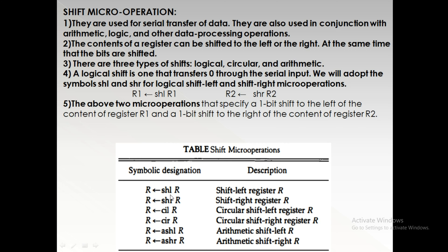Shifts are represented as: SHL for shift left register, SHR for shift right register, SCIL for circular shift left, CIR for circular shift right, ASHL for arithmetic shift left, and ASHR for arithmetic shift right. These micro operations specify a one-bit shift to the left of the content of R1 and a one-bit shift to the right of the content of register R2.